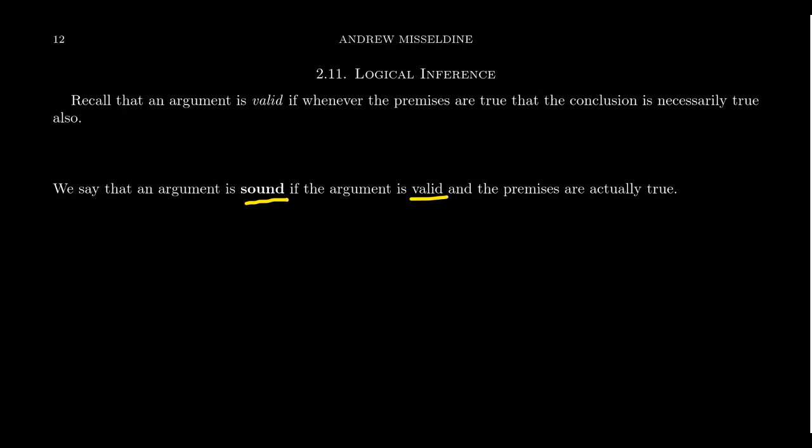An argument is unsound if it's not sound. Of course, if an argument is invalid, then it's unsound. But if your argument is valid and the premises are false, then you still have an unsound argument. Soundness is a very important attribute you look for in an argument. An argument can be unsound even if it's valid — you have to make sure the premises are true as well.